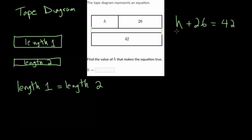We want to get H by itself, which means we have to get rid of this plus 26. We can cancel addition with subtraction, so we will subtract 26 on each side. 42 minus 26: if we take away 6 that brings us to 36, and then take away 20 brings us to 16.